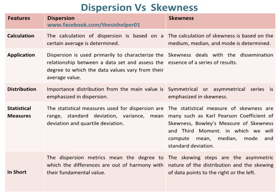Symmetrical or asymmetrical series is emphasized in skewness. The statistical measures used for dispersion are range, standard deviation, variance, mean deviation, and quartile deviation, whereas the statistical measures of skewness include Karl Pearson's coefficient of skewness, Bowley's measure of skewness, and the third moment.